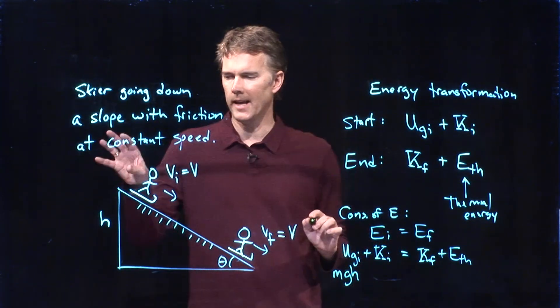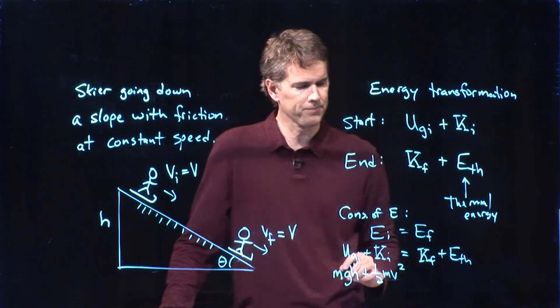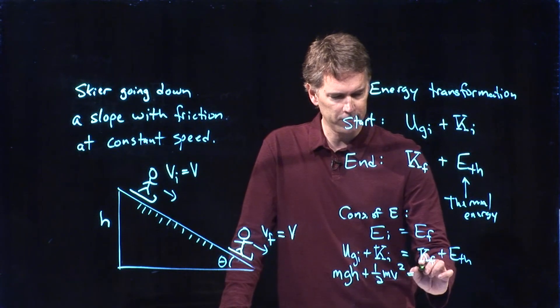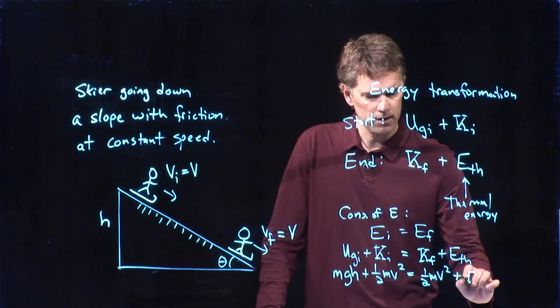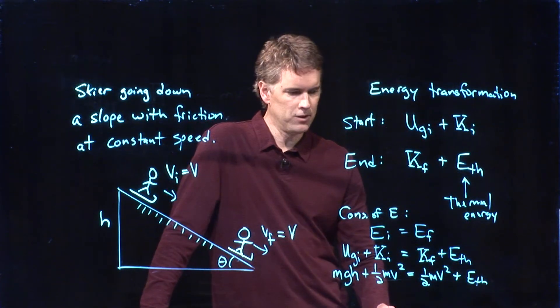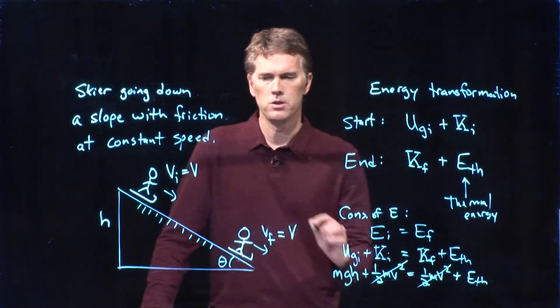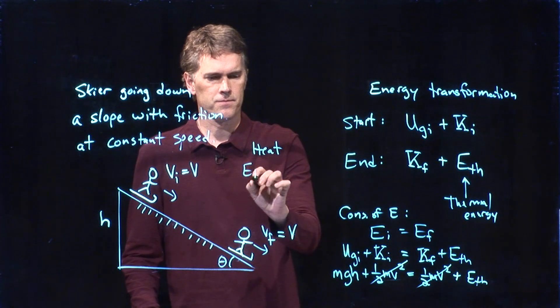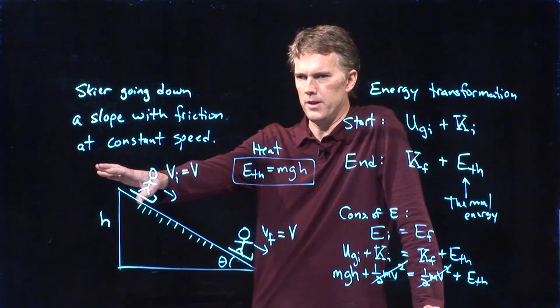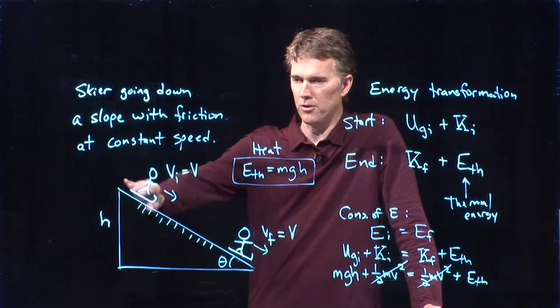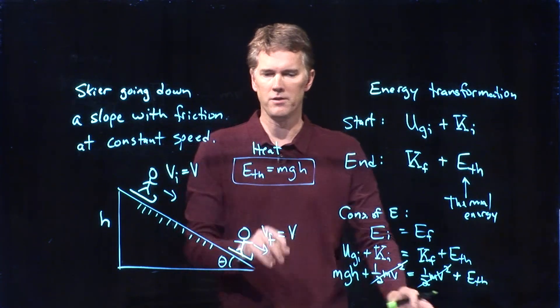UGI, in this case, is just MGH. How high did you start? You started at height H. That's your gravitational potential energy. At that height, we were moving at speed V. So this is one-half M V squared. Down at the bottom, we're still moving at speed V. So this is one-half M V squared. And we have generated heat. Energy thermal. So, in fact, in this problem, look what happens. We can cross out the one-half M V squared from both sides. I subtract those. And how much heat have I generated? It's just how much potential energy I started from. All of the potential energy that you had initially went into heat. It heated up the snow. It heated up the skis. It heated up the air as you pushed it out of the way.